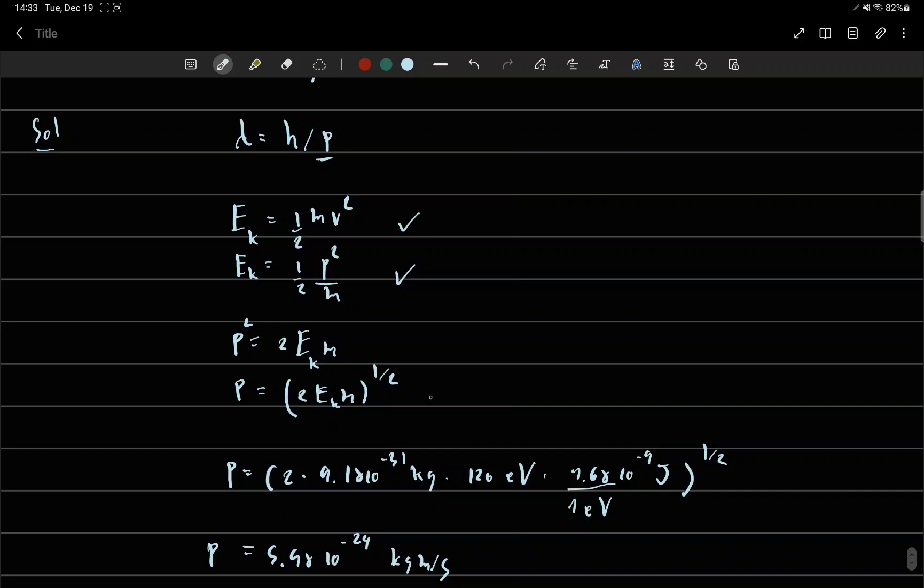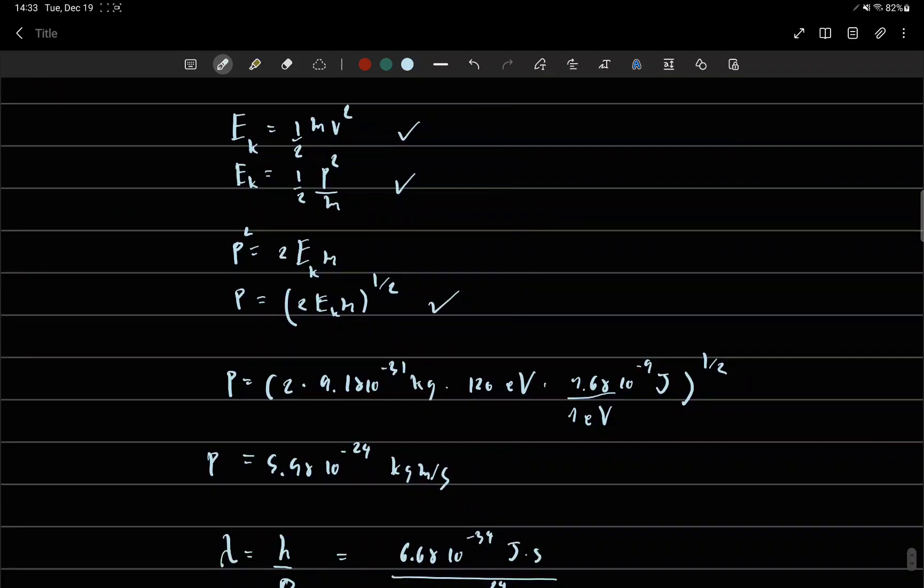Then we can find momentum, and momentum is equal to 5.9 times 10 to the minus 24 kilograms meters per second.